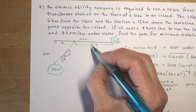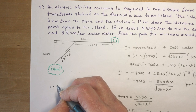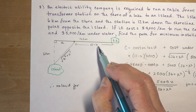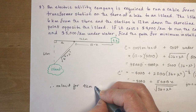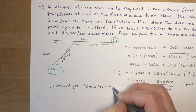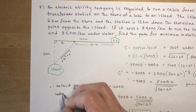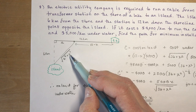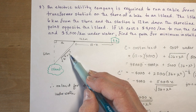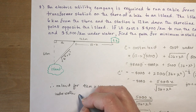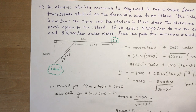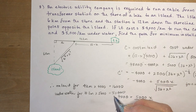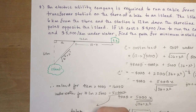With x equals 8: the land portion is 4 kilometers at $4,000 per kilometer equals $16,000. Underwater, the distance is the square root of 36 plus 64 equals the square root of 100 equals 10 kilometers, at $5,000 per kilometer equals $50,000. The total minimum cost is $16,000 plus $50,000 equals $66,000.